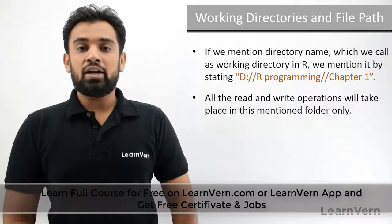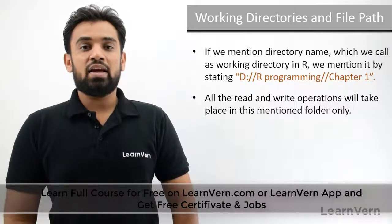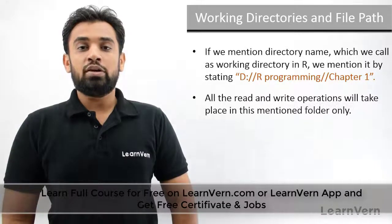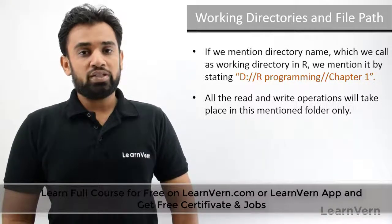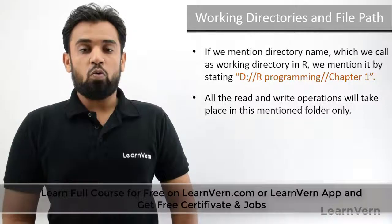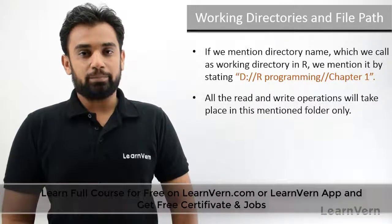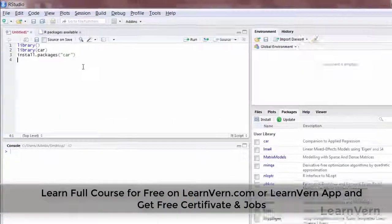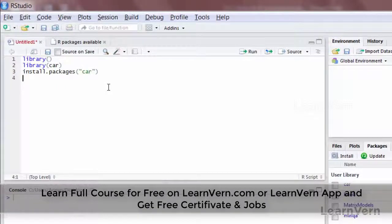During an R session, if reading and writing of files takes place multiple times, there is a concept of setting the working directory permanently so that you don't need to write the full path every time. To know the current working directory, write the command getwd() with empty parentheses. If writing in the RStudio scripting area, press Ctrl+Enter.